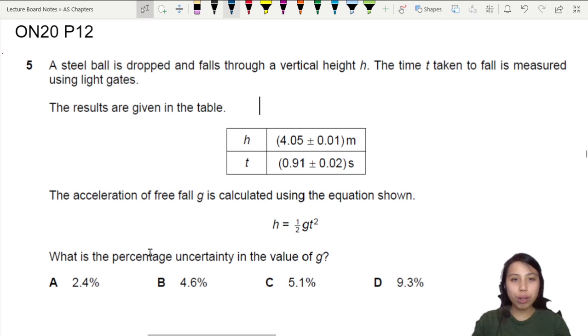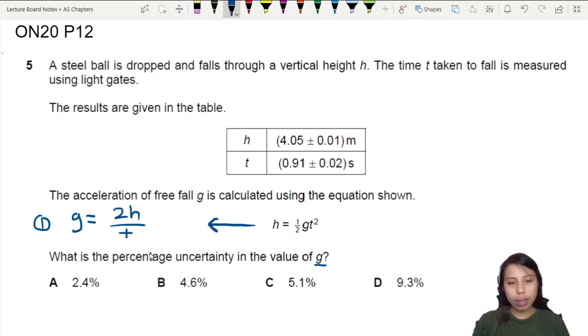What's the percentage uncertainty in the value of g? First step you want to do is rearrange the equation into the value that you want to find. You want to find g, right? So how to find g? g will be equal to 2h divided by t squared. You must rearrange first.